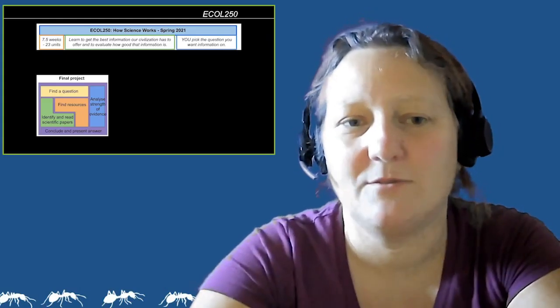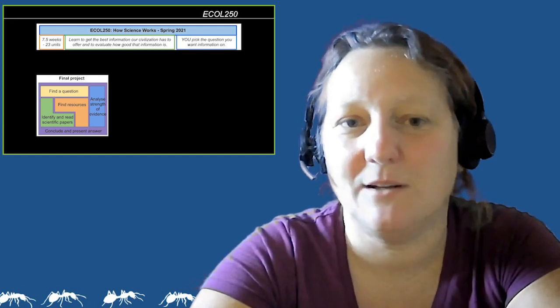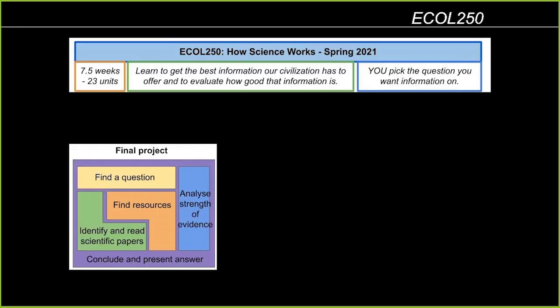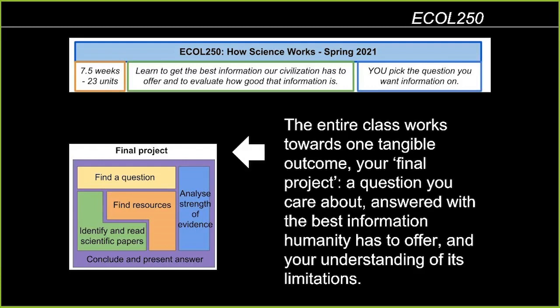The main goal of the course in terms of outcomes is a final project. That final project has several puzzle pieces: you'll find a question you're interested in, find resources, identify and read original scientific papers about that topic, and analyze how strong the evidence is for the particular answer presented. In your final project you'll conclude from all these references what the overall answer is. The entire course period will work towards this tangible outcome.